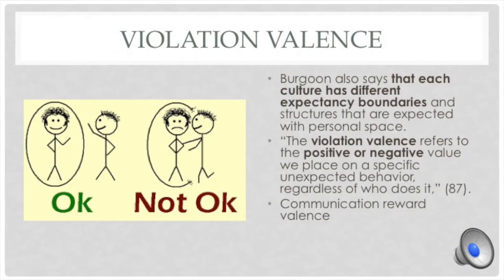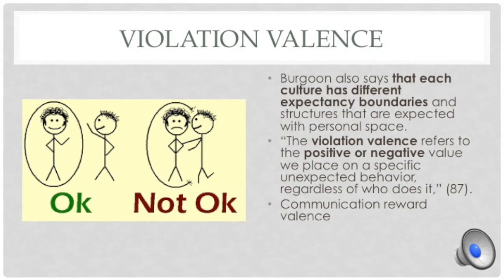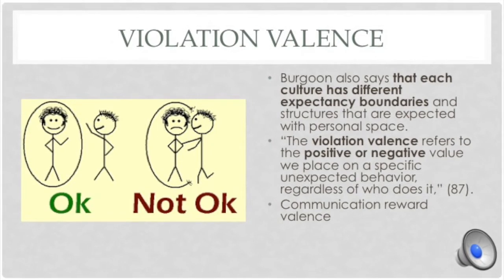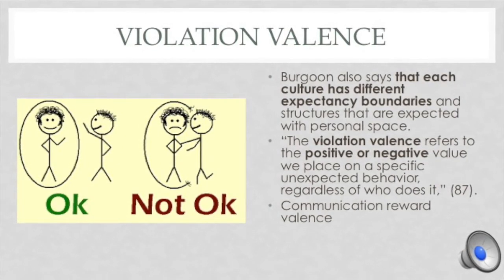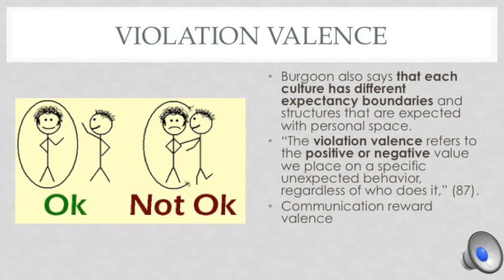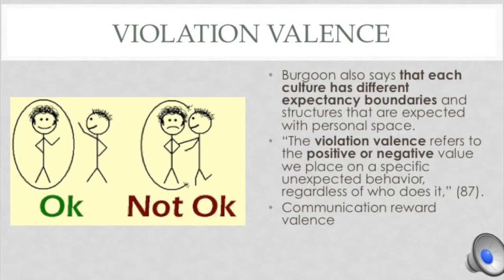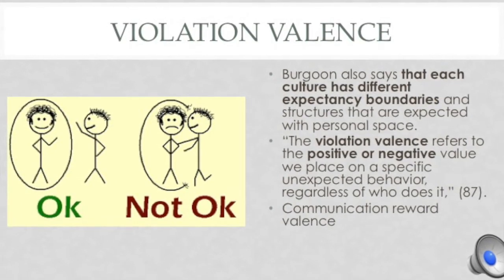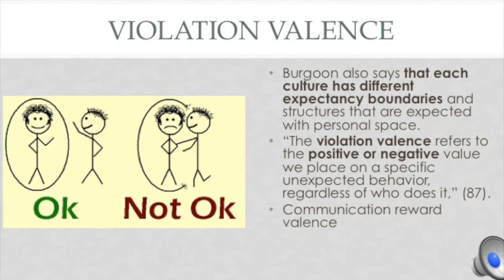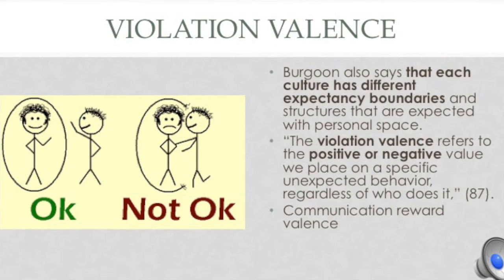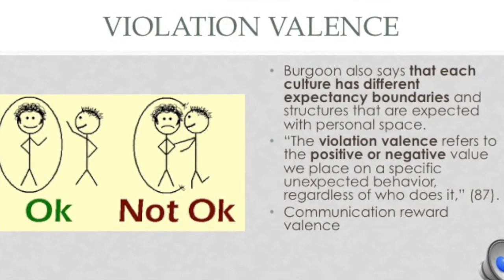Expectancy is what an individual predicts will happen during an interaction, rather than what they desire. Burgoon also says that each culture has different expectancy boundaries and structures expected with personal space. Violation valence is also a key component in this theory. This eventually leads to communication reward valence, which is the reaction an individual has to the unexpected behavior, whether it is a positive or negative reaction.